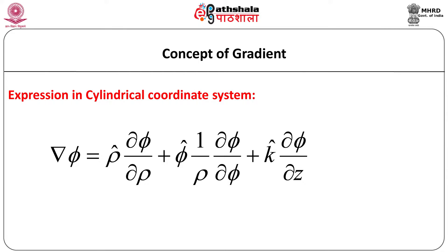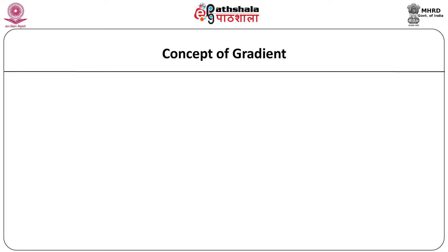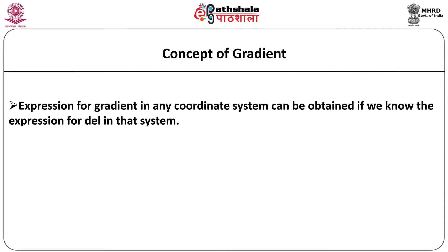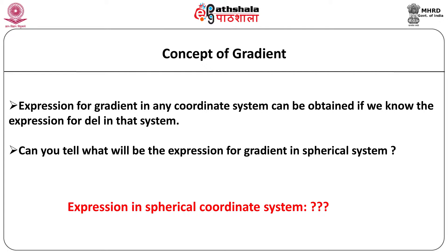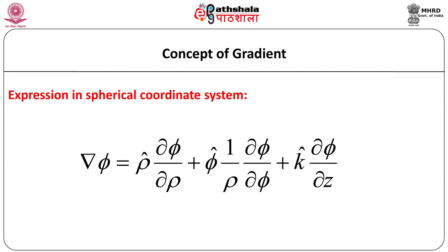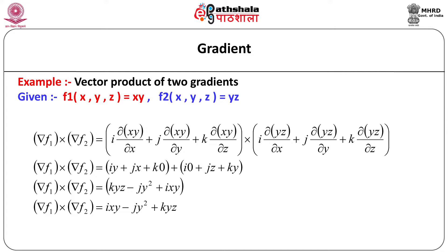Now let us see the gradient in cylindrical coordinate system — the expression is as shown. The expression for gradient in any coordinate system can be obtained if you know the expression for del in that system. The expression for gradient in spherical coordinate system is also provided. Since gradient is a vector quantity, we can perform all types of operations with gradients — addition, scalar product, vector product, etc. As an illustration, here is the vector product of two gradients, where F1 and F2 are the two functions under consideration.